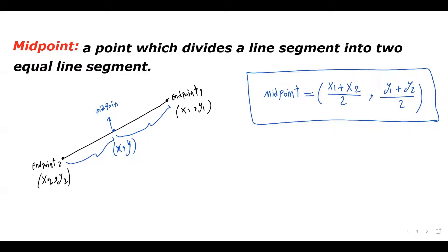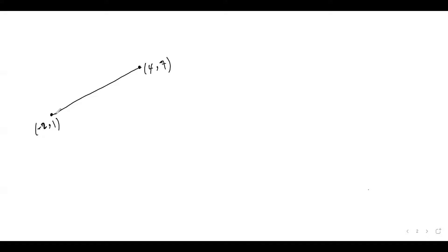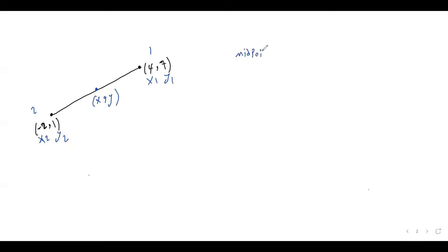Let's do examples. Let's say I have this line and I have the coordinates of the two endpoints. This is my first point and this is my second endpoint. So this is x1, y1, and this is x2, y2. I am trying to find the coordinate of the midpoint — here is my midpoint. I want to know what is the coordinate of this point; I am looking for x and y. We use the midpoint formula: midpoint equals (x1 + x2) / 2 and (y1 + y2) / 2.